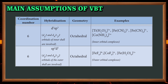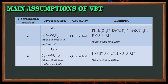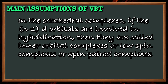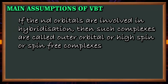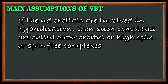For coordination number 6, there are two types: d2sp3 hybridization gives octahedral geometry in inner orbital complexes, and sp3d2 hybridization gives octahedral geometry in outer orbital complexes. In octahedral complexes, if the (n-1)d orbitals are involved in hybridization, they are called inner orbital complexes, low spin complexes, or spin paired complexes. If the nd orbitals are involved in hybridization, such complexes are called outer orbital, high spin, or spin free complexes.